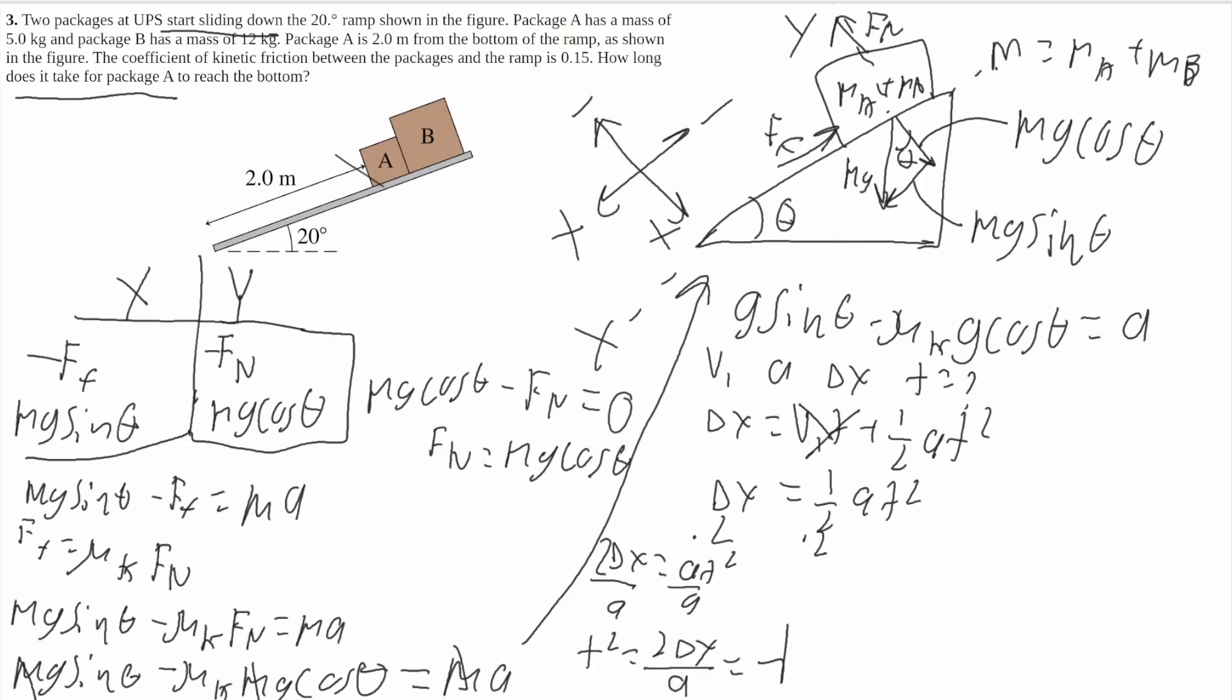So T will be equal to the square root of two delta X over A. Now you plug this whole big A term, that entire thing, you have to plug that all into that down there. And it gets really big and ugly. So I'm just going to draw myself a little separate space here. So T is going to be equal to the square root, it'll be two delta X all over G sine of theta minus mu kinetic G cosine of theta. That there is your answer.